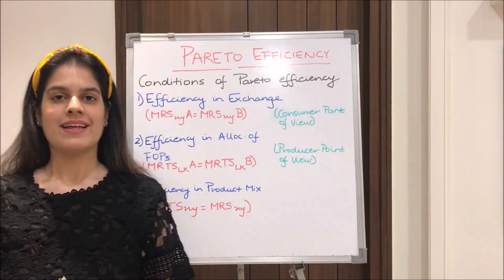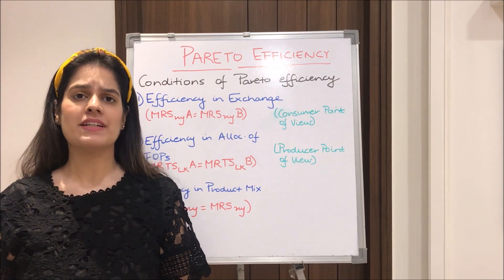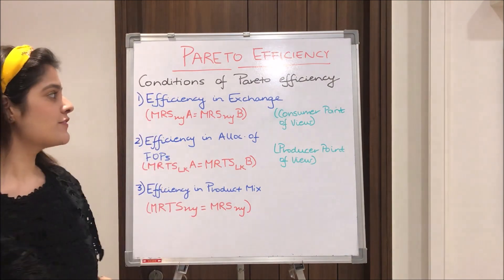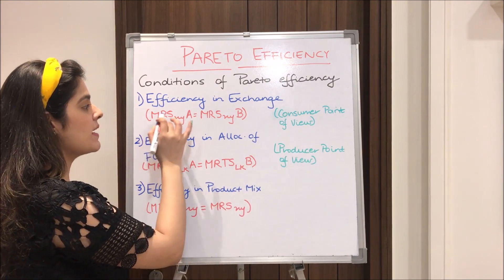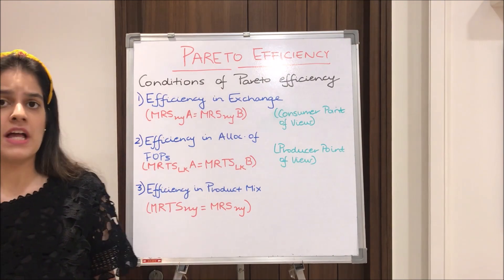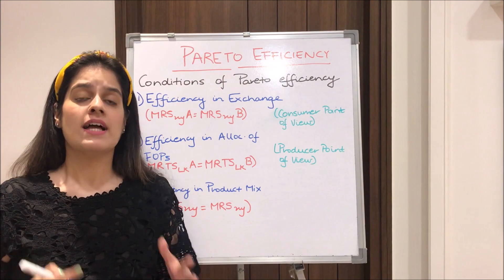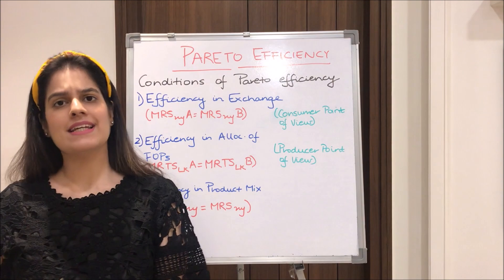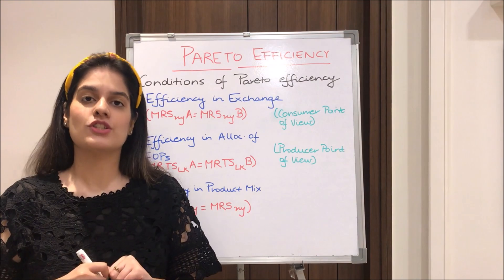Moving to the three conditions of Pareto efficiency — these are repeatedly asked in many examinations, so make sure you remember them. The first one is efficiency in exchange, from the consumer point of view. Here, MRS XY for consumer A equals MRS XY for consumer B. MRS stands for marginal rate of substitution, meaning that when a consumer wants to increase usage of one commodity, he has to reduce usage of another so that the utility derived remains the same.